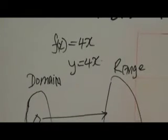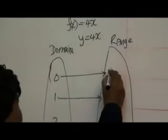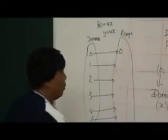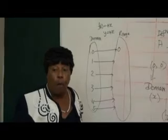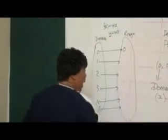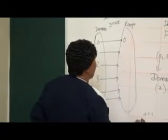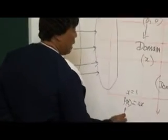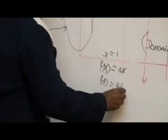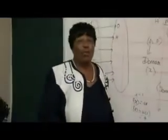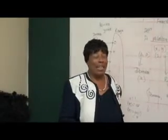Zero would be mapped onto zero. What would 1 be mapped onto? Using the equation y = 4x, it would be mapped onto 4. How did you get 4? Because it is 4 times 1. So we said: when x is equal to 1, then f of x = 4x means f(1) = 4 times 1, which is equal to 4. We are teaching the people at home, so we have to tell them step by step.